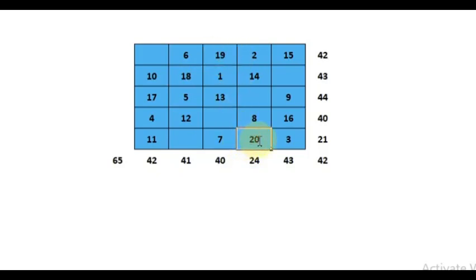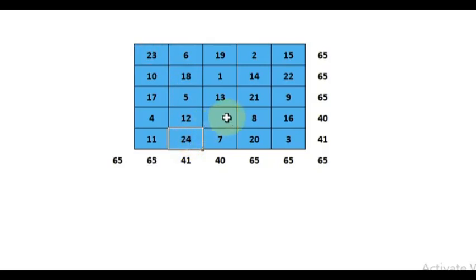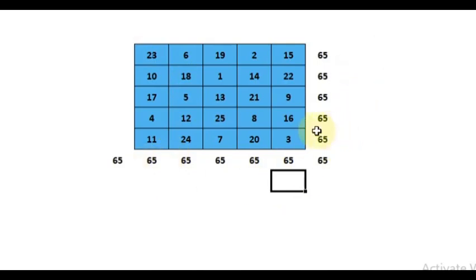After coming to twenty, you can't go in a diagonal. Go two steps higher — that is twenty-one, twenty-two, twenty-three. Then come here — twenty-four and twenty-five. So by this way, you are able to construct a five by five magic square using the Bachet de Méziriac method.